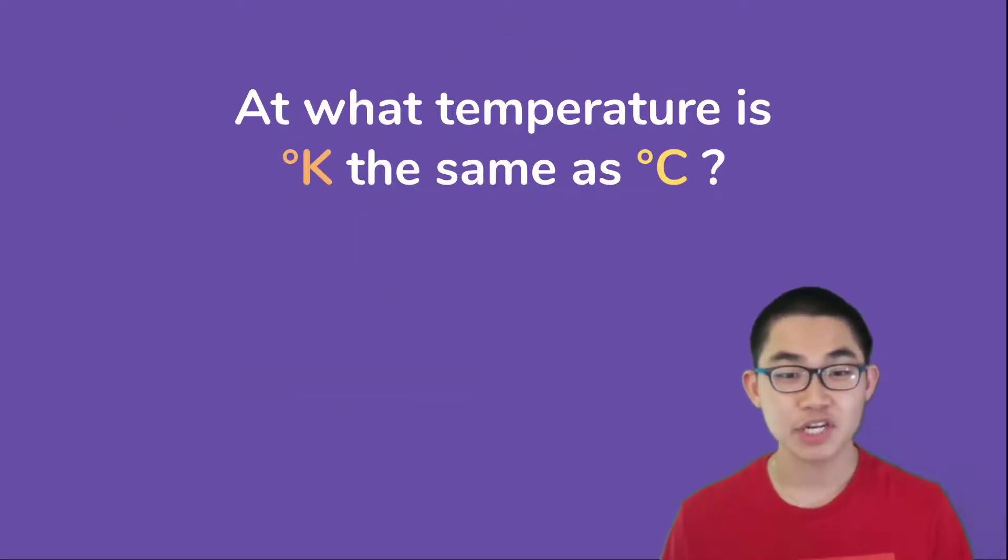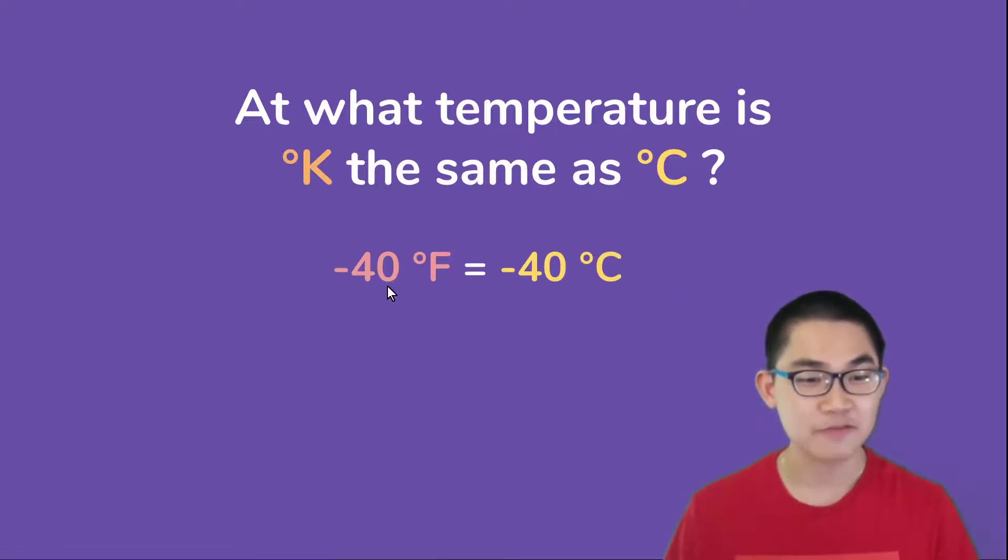At what temperature is the degree in Kelvin the same as the degree in Celsius? Last time I showed you that negative 40 degrees Fahrenheit is the same as negative 40 degrees Celsius—notice that these two numbers are the same. So this question is asking for the same thing: what is the number in Kelvin that is equal to the degree in Celsius where these two numbers are the same?